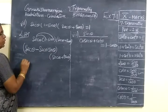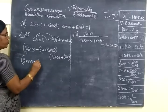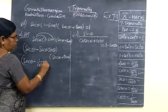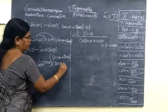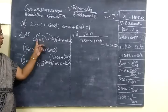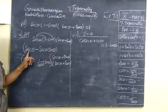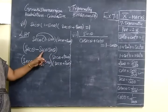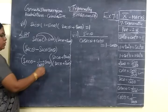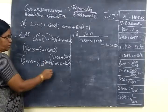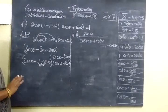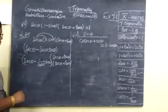This sec θ can be written as 1 by cos θ. We know the identity sec θ equals 1 by cos θ, and sin θ by cos θ is equal to tan θ. So this sec θ sin θ becomes tan θ. We are using the identity sin θ by cos θ equals tan θ throughout this topic.